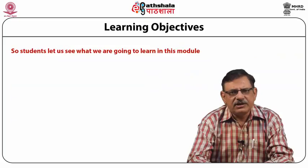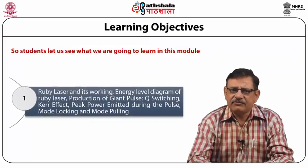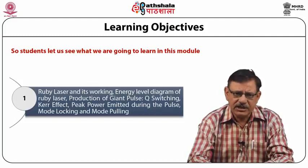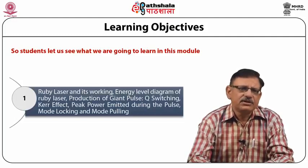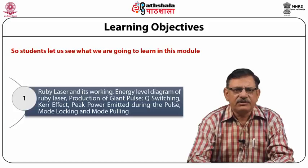We will be able to learn Ruby Laser and its working, energy level diagram of Ruby Laser, production of giant pulse with the Q-switching mechanism, the Kerr effect, peak power emitted during the pulse, mode locking and mode pulling.